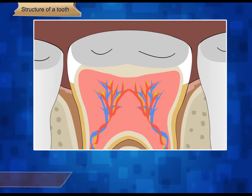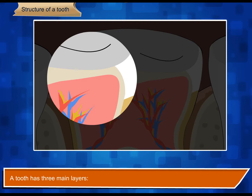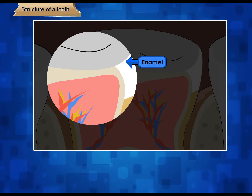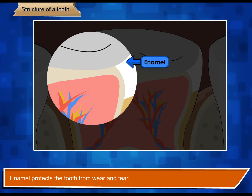Layers of a tooth. A tooth has three main layers. Enamel: the outer hard white layer is called the enamel. It is the hardest substance in our body. Enamel protects the tooth from wear and tear.